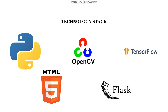Here are the technologies we have used in this project. We have used front-end technologies like HTML, CSS, and JavaScript, and back-end technologies like Python, TensorFlow, and OpenCV. We have also used a Flask module to display the prediction of garbage image items through a simple web page for demonstration.